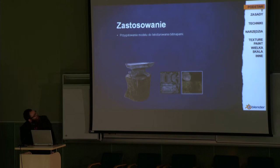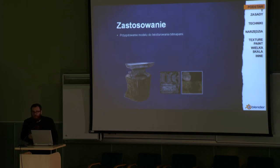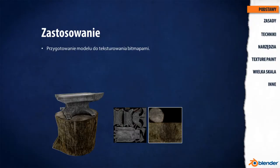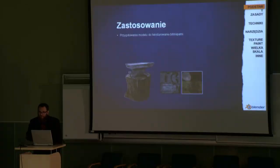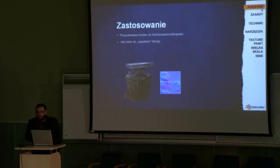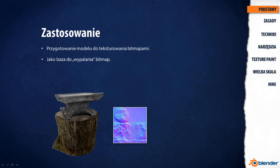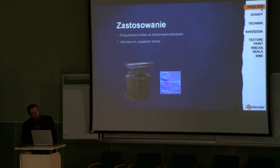Why do we use them? Why do we need them? First of all, it's preparation of our 3D model in order to texture it with a bitmap. Basically, UVs are telling the bitmap where on the 3D model it should appear. It's also used as a base to bake the information contained in the model to the bitmap.